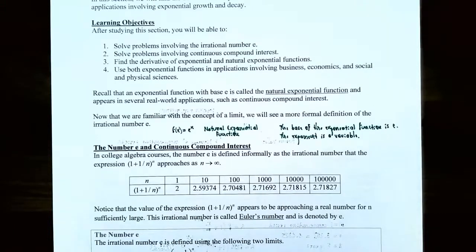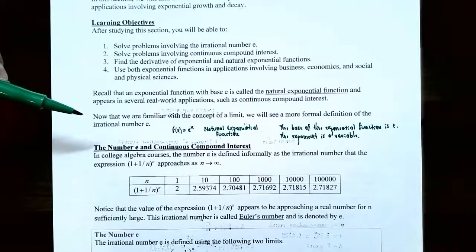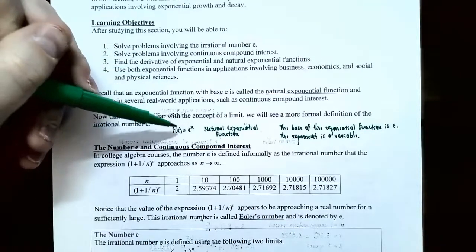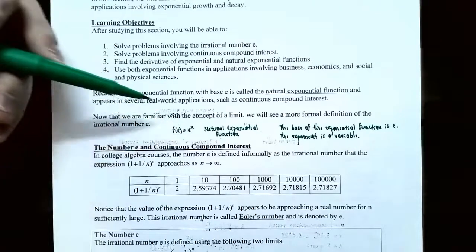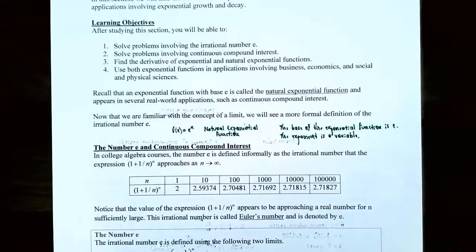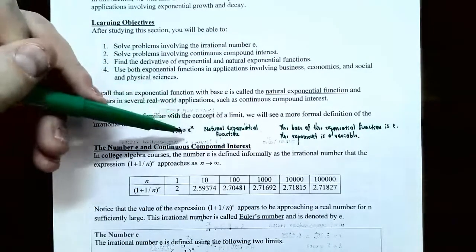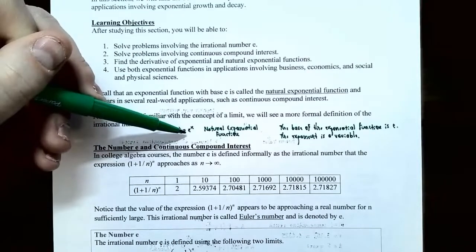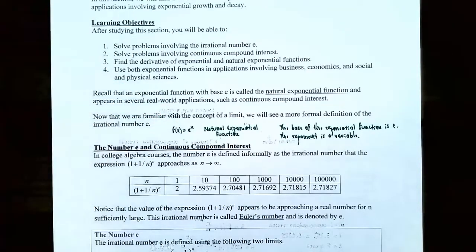Now that we're familiar with the concept of a limit, we can find the formal definition for the irrational number e. The natural exponential function is of the form f(x) = e^x, where e is a number — the base is a number — and the exponent contains the variable x. This is not to be confused with power functions: in power functions, the base is the variable and the exponent is the number, whereas in exponential functions, the base is a number like e and the exponent is the variable.